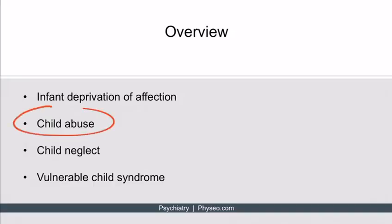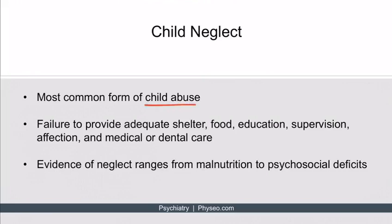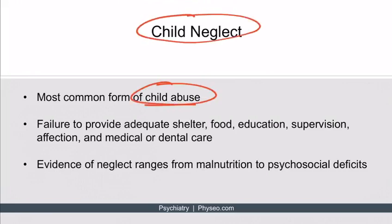Now let's talk about child neglect. Child neglect is the most common form of child abuse, though we categorize it separately. Child neglect is defined as a failure to provide adequate shelter, food, education, supervision, affection, and medical or dental care. The presentation can range from physical issues like malnutrition or poor hygiene, all the way to psychosocial deficits.